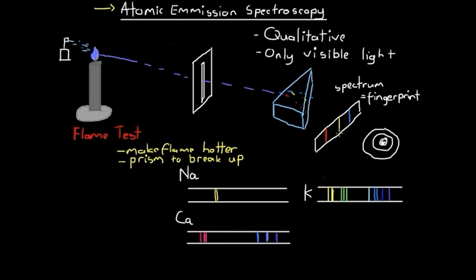Why are these lines so narrow on the emission spectrum? When the electron jumps from, say, the second shell to the inner shell, it's jumping from a very specific energy level to another very specific energy level. That means the ray of light released in this process has to contain a very specific amount of energy — namely the difference in energies between the second and first shell. Because this photon has to contain such a specific energy, it means it's a very specific frequency, which shows up as a very thin line on the continuous visible light spectrum.